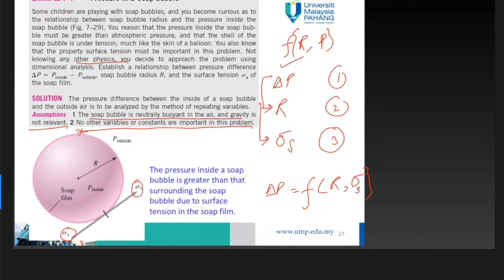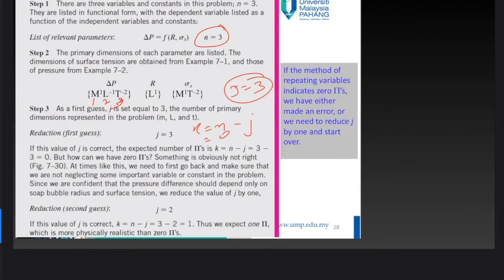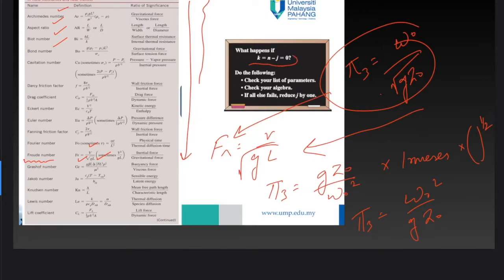Step one is to list the parameters. We have n = 3 parameters and three primary dimensions, so j = 3 repeating variables. Using k = n − j gives k = 3 − 3 = 0. Since k = 0, we cannot proceed this way — we need to reduce j by 1.